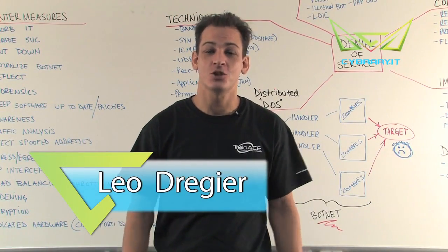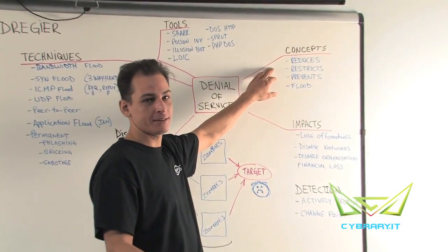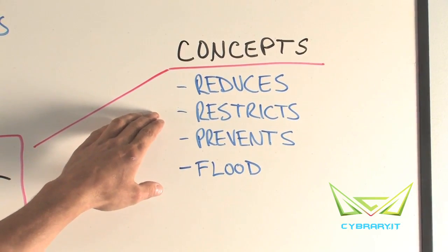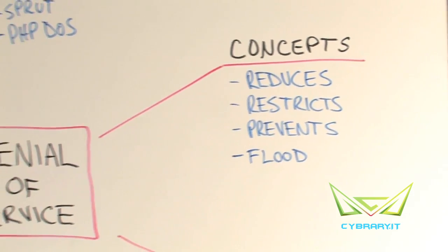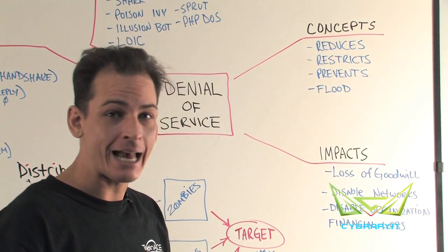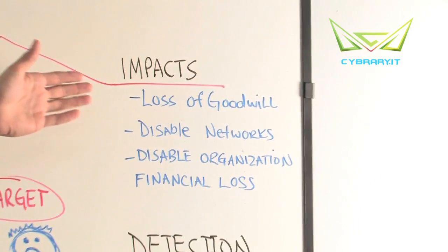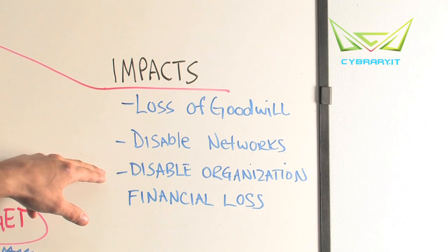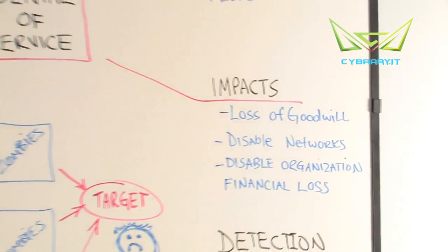In this module we're talking about distributed denial of service. The basic concept is to reduce someone's network availability, restrict legitimate access, or flood a target with an overwhelming number of requests so regular users cannot get access. This is rooted in the CIA triad's availability section. The impact could result in loss of goodwill, a network that is partially or completely unusable, or in the worst case, disabling the organization completely, resulting in financial loss.